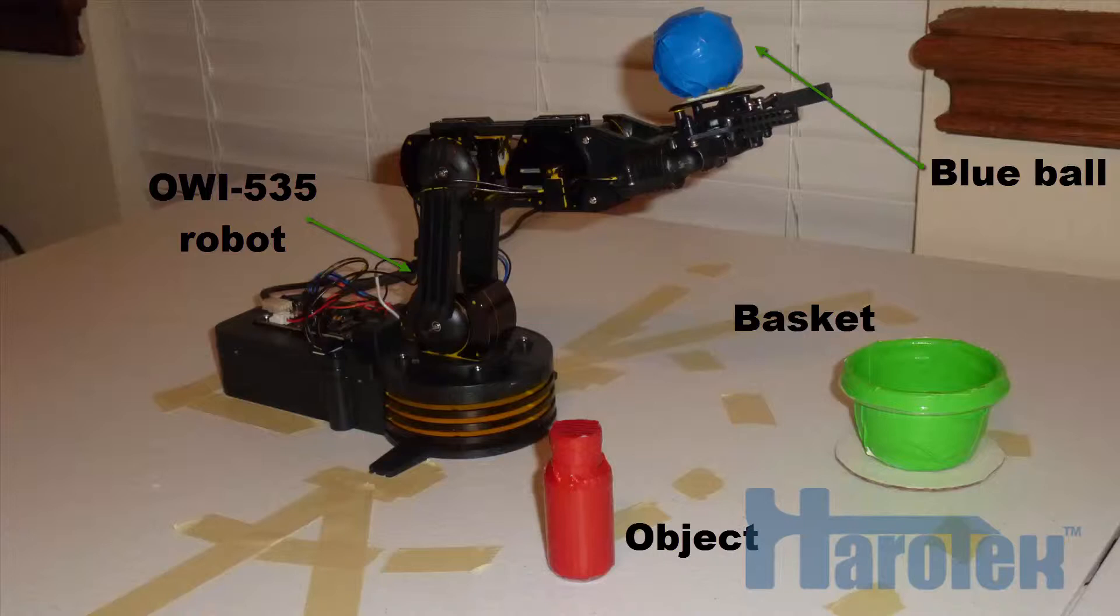The computer should also provide instantaneous feedback if the object and basket are outside the robot operating zone, and if any object is missing or if they are too close to each other. The robot operating zone is indicated on a table by masking tape.